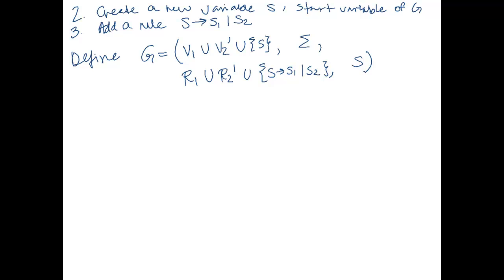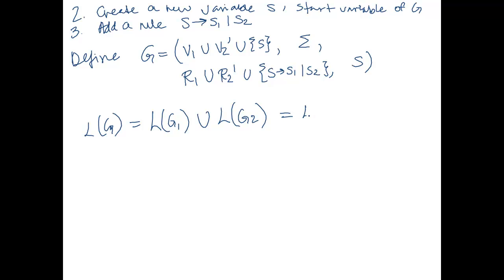What this allows us to do is: when we have some string and want to find a derivation, we start at S and then either go to S1 or S2. S1 is the start variable for grammar 1, so we can apply any rules from G1 to derive the string. Or we replace S with S2 and use any rules in G2. So the language of G truly is L1 union L2. That's our first proof.